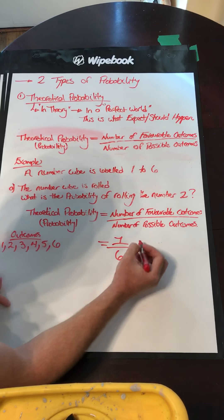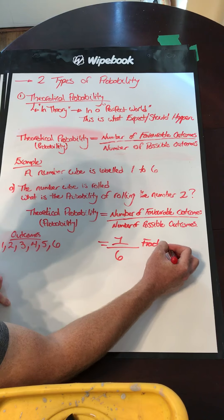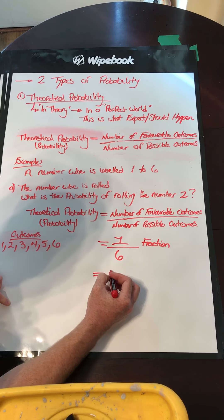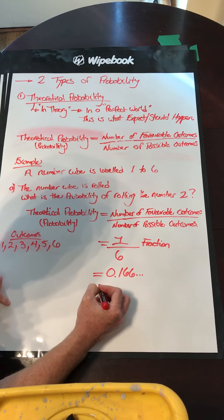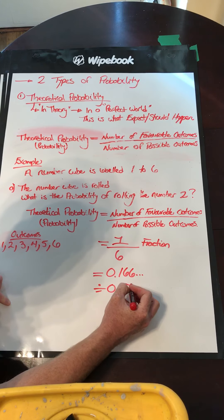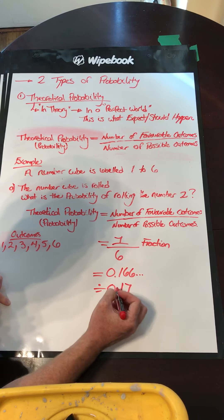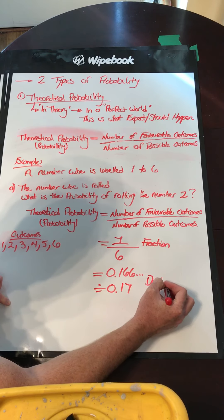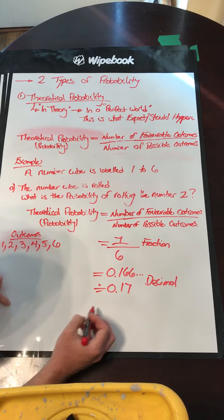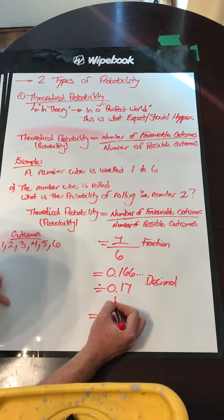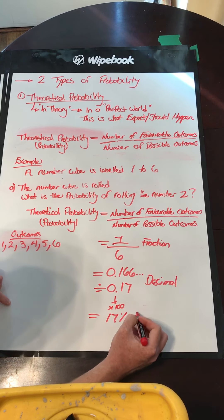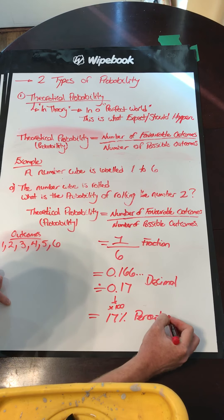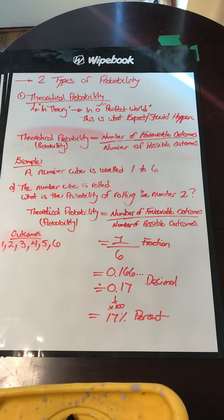We can write a probability as a fraction, or as a decimal, which would be 0.1666 repeating, and we would round to 0.17. And finally, we can do it as a percent — to get a percent, we multiply by one hundred, and we get seventeen percent. So we can write probabilities as either a fraction, a decimal, or a percent.